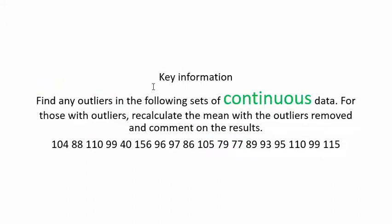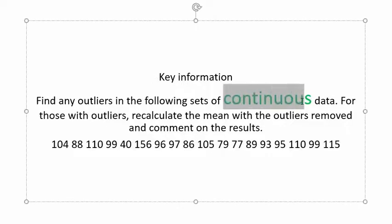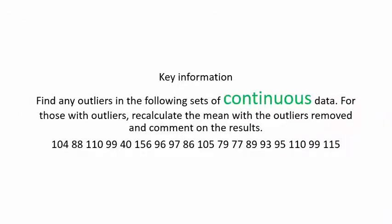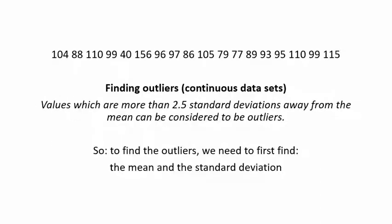There's some key information we need. When trying to find outliers, it's important to know whether we have continuous or discrete data. We're told in our question that we have continuous data, so we need to follow a procedure that applies for continuous data sets. Taking a look at our textbook, it tells us that when we want to find outliers for continuous data sets, we need to look for values which are more than 2.5 standard deviations away from the mean of the data. So in order to find those outliers, we first need to know what the mean and the standard deviation are.